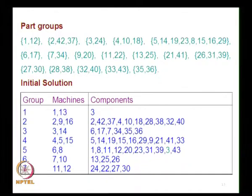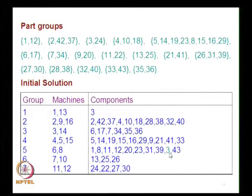We then ask: should we restrict every machine group and part family to have at least 2 members? If yes, component 3 should not be assigned to group {1, 13}. So component 3 goes to its next best group. This means we started with 7 machine groups but now have only 6 part groups — an unequal number. A solution is only accepted when the number of machine groups equals the number of part groups.